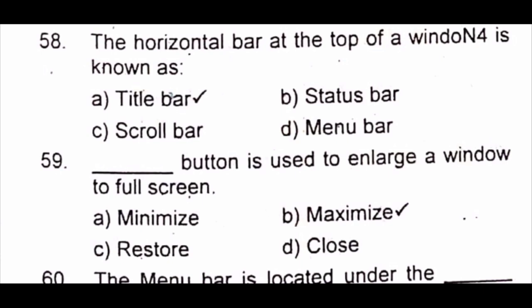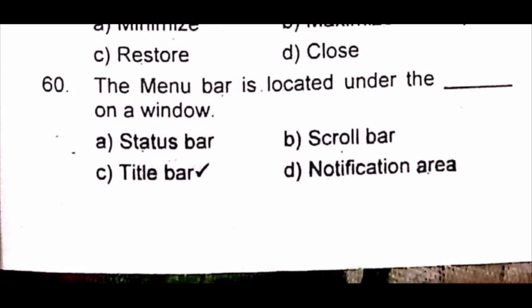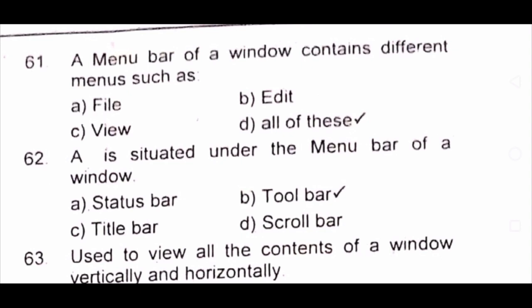Question 59: Dash button is used to enlarge a window to full screen. A) minimize B) maximize C) restore D) close. The answer is B) maximize. Question 60: The menu bar is located under the dash on a window. A) status bar B) scroll bar C) title bar D) notification area. The answer is C) title bar.